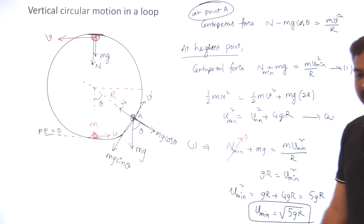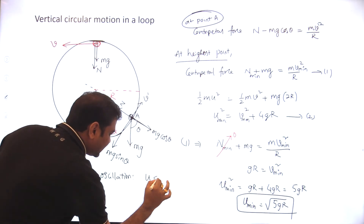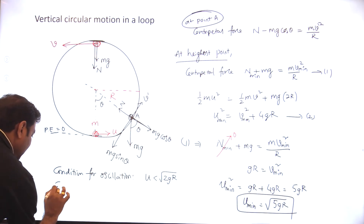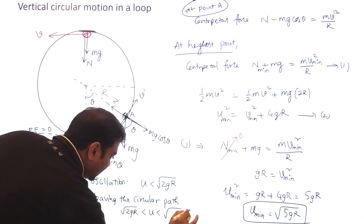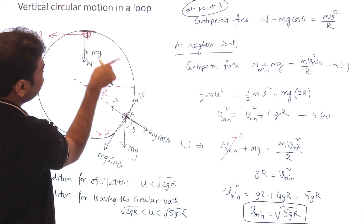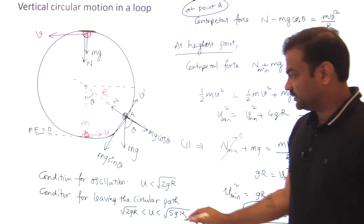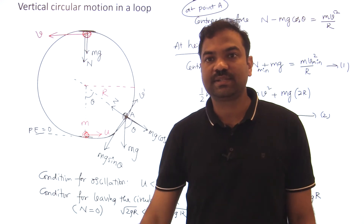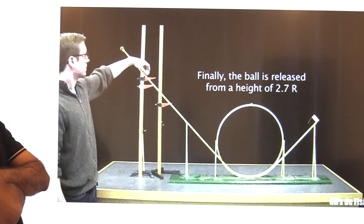Now the conditions: For oscillation, u < √(2gr) (same as √(2gL) for a pendulum). For leaving the circular path, √(2gr) < u < √(5gr) — if u is between these values, the particle will leave the circular path in the region between 90° and 180°. The condition for leaving the circular path is N = 0, whereas in the pendulum case, tension = 0. This phenomenon is also called looping the loop.